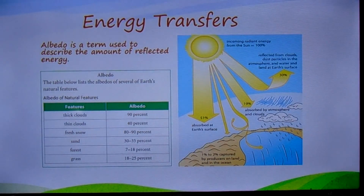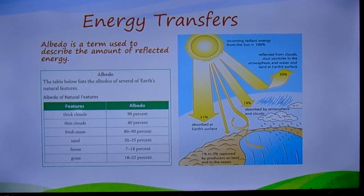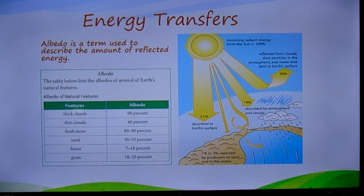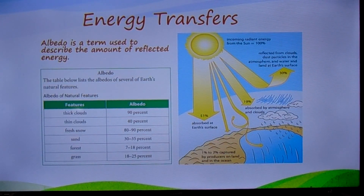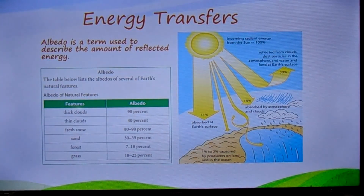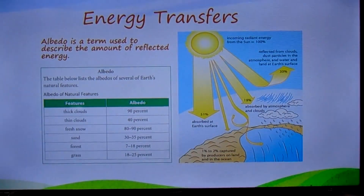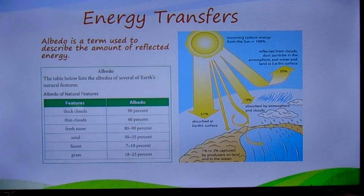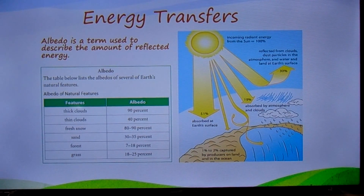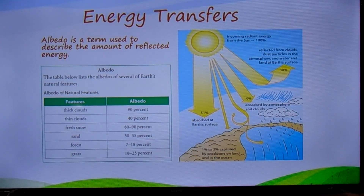Light-colored reflective surfaces and thick clouds have albedos of 80 to 90 percent. Dark surfaces such as forest canopies and water have lower albedos of 25 percent or less. About 90 percent of energy is absorbed by gases such as water vapor and carbon dioxide in the atmosphere. Some of this energy heats the atmosphere and some radiates back into space. About 51 percent of the energy reaches the Earth's surface.